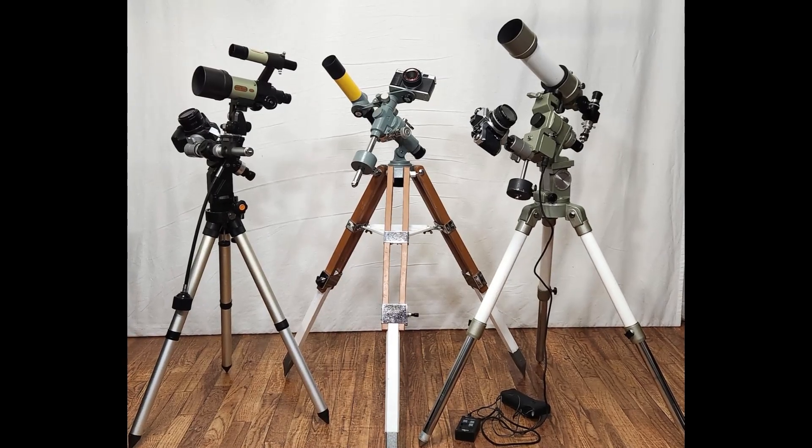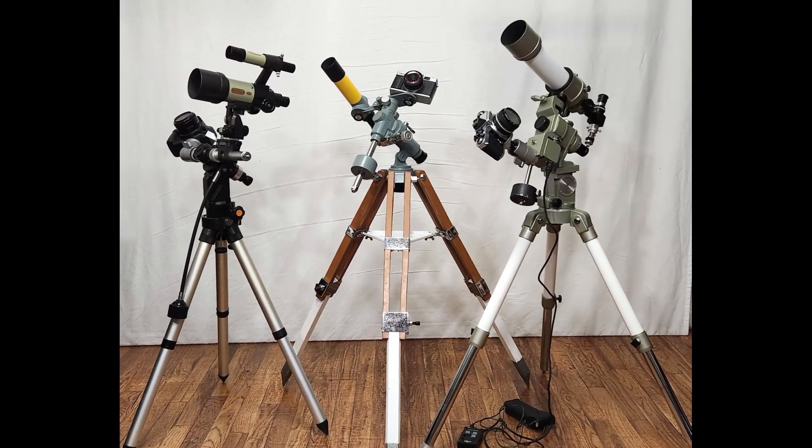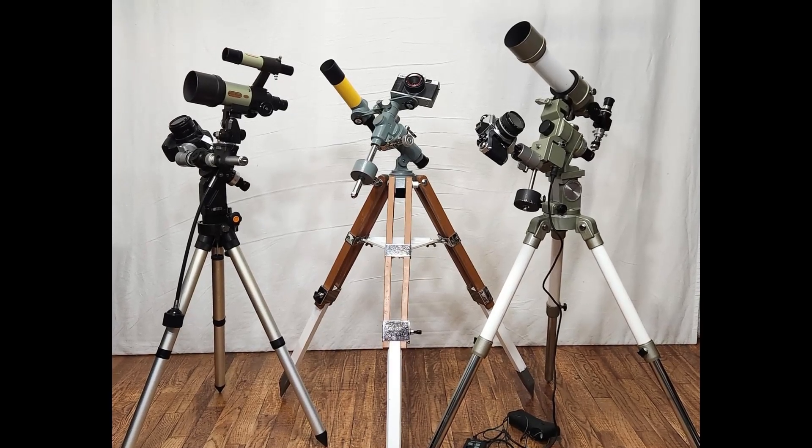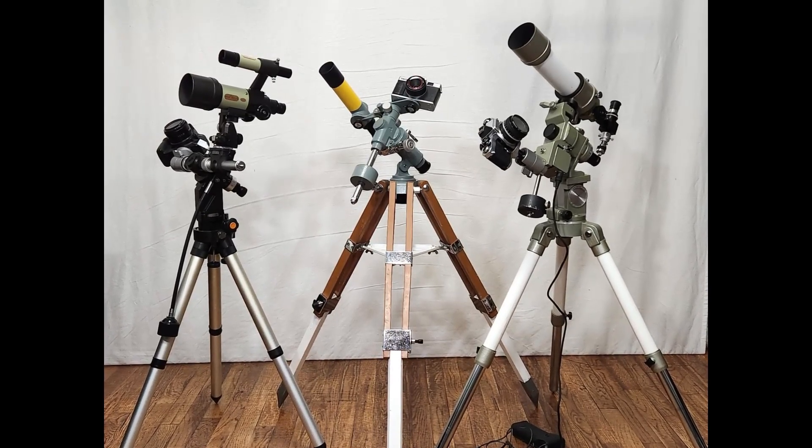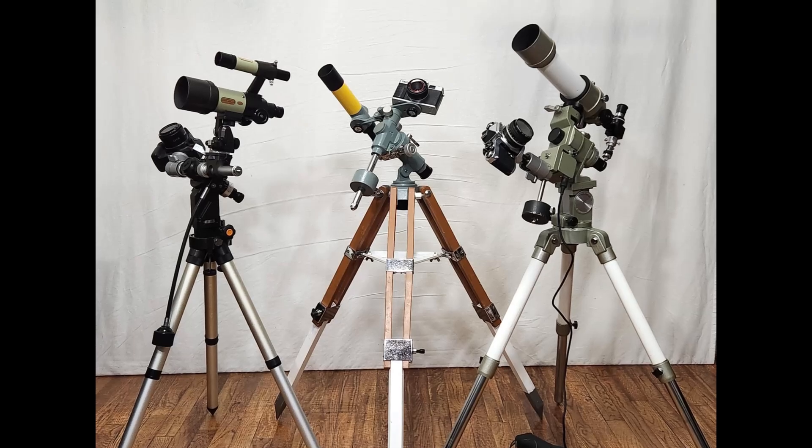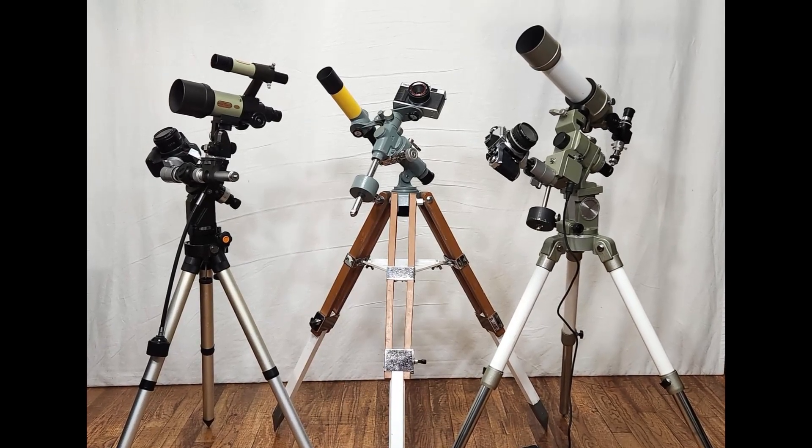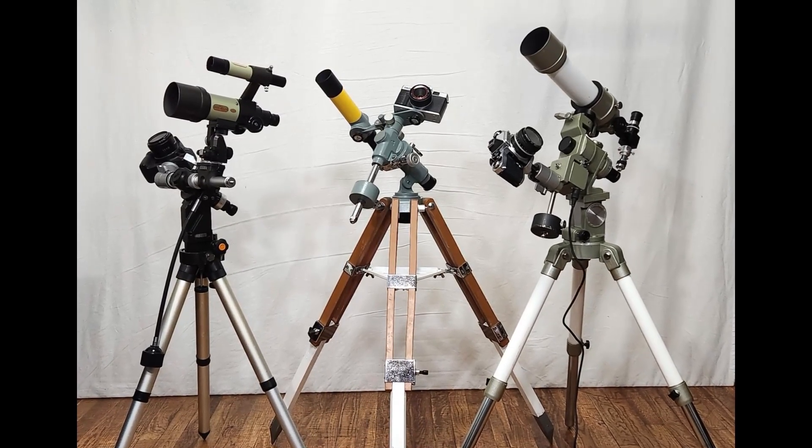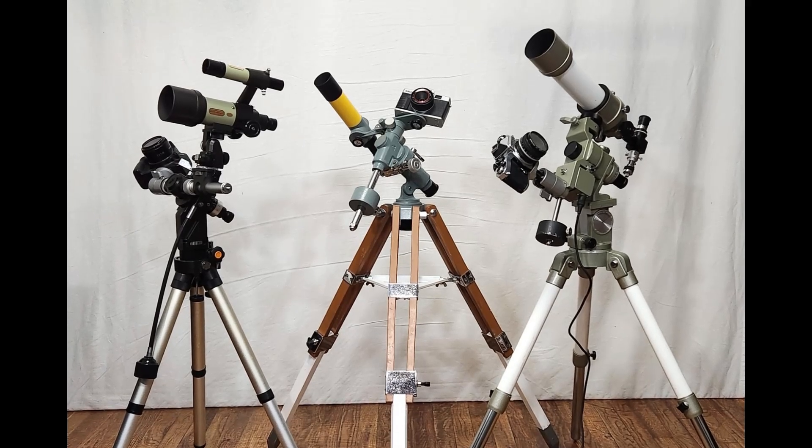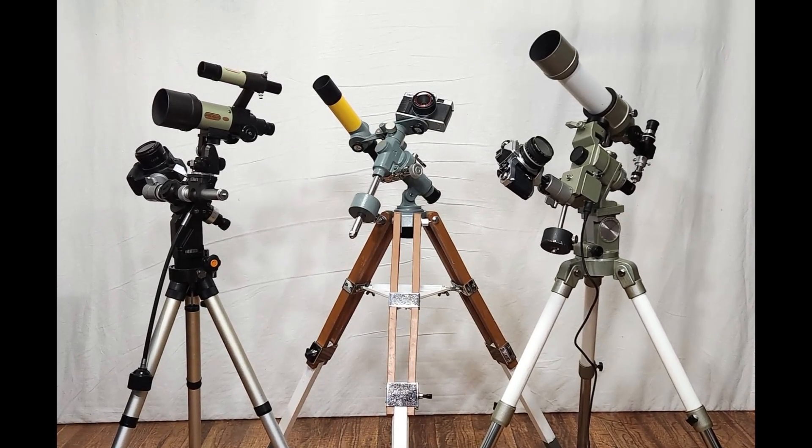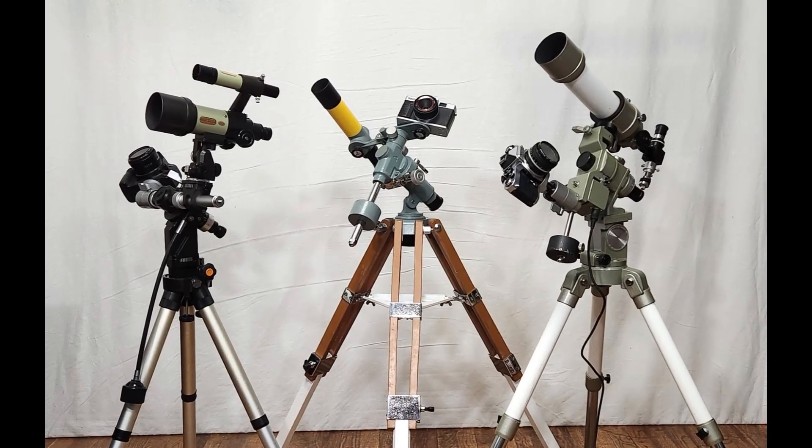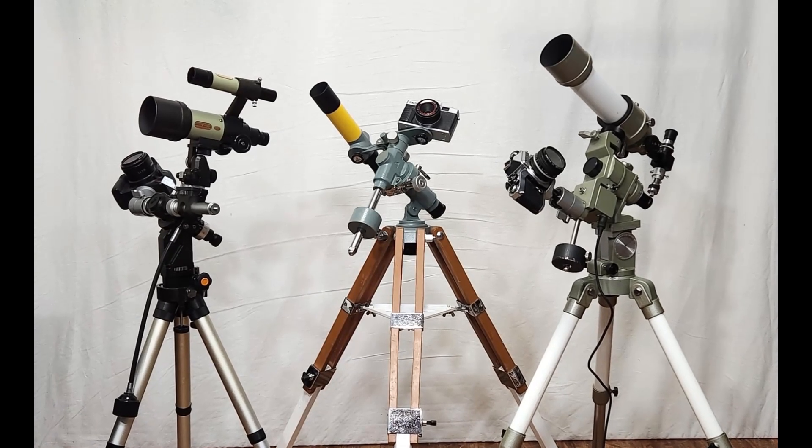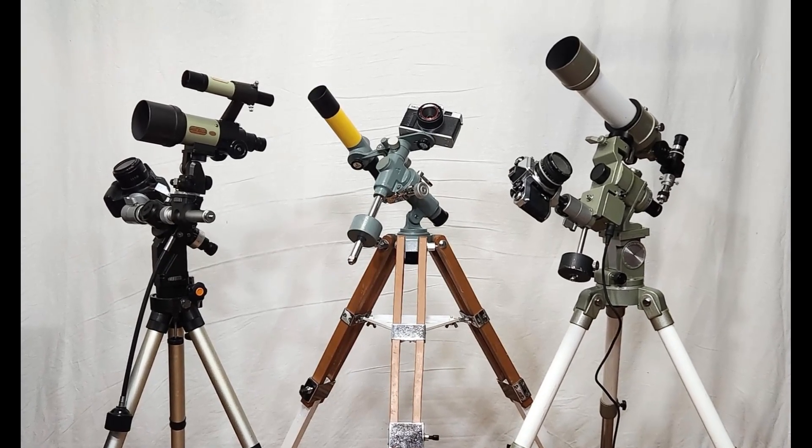The Vixen Photoguide systems were approximately the same size as the Takahashi Sky Patrol mount and they had about the same capability and they were pretty much equally portable. Advantages and disadvantages either way but very comparable kinds of things. There were a bunch of these around that time. I hope you've enjoyed having a look at these Vixen Photoguide trackers. Thank you very much for watching.